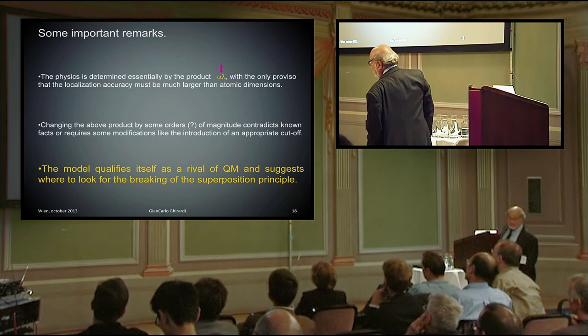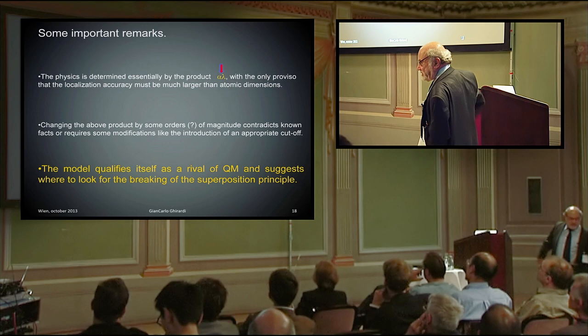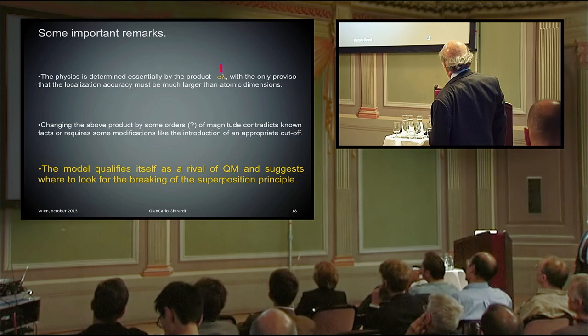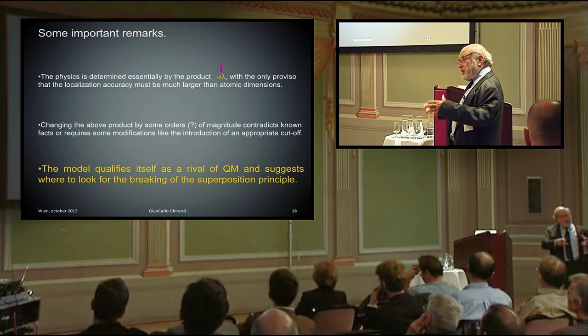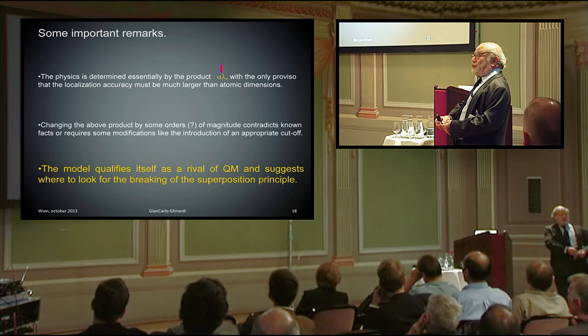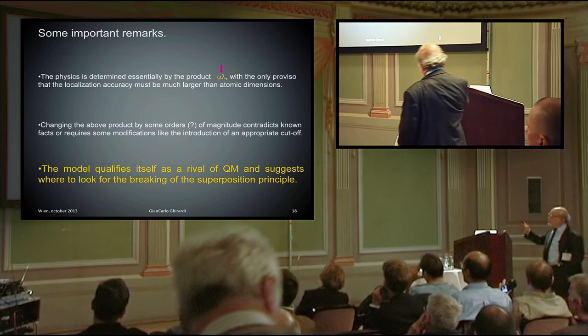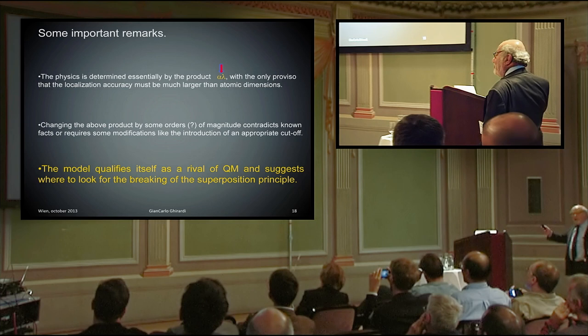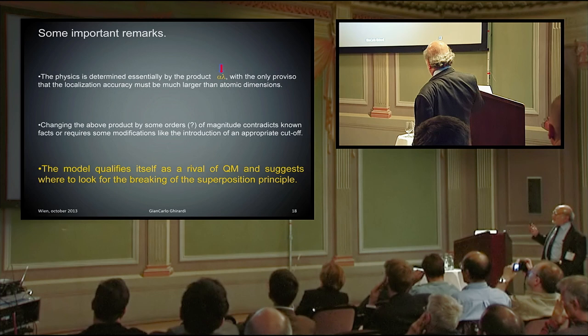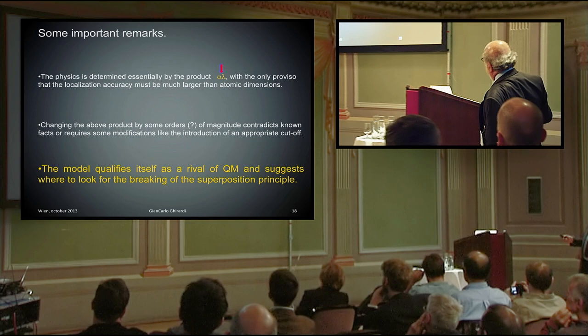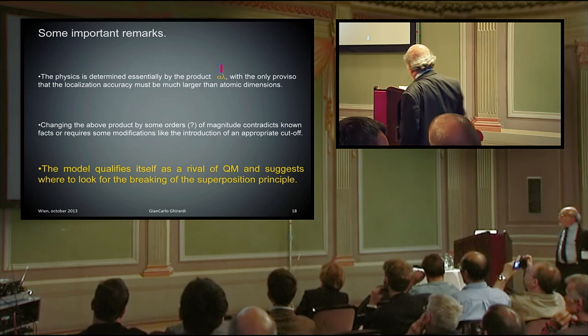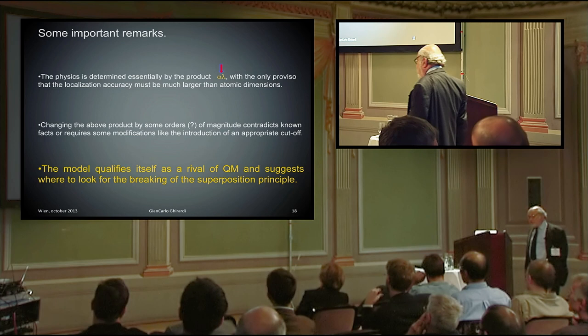Some remarks. The physics is determined essentially by the product of alpha times lambda. One over square root of alpha is the localization accuracy, lambda is the localization frequency, with the only proviso that the localization accuracy must be much larger than atomic dimensions. Otherwise, the localization inside the macroscopic body like a solid would produce dislocations or something like that, which can be proven already to violate experimental situations. Changing the above product by some orders, and I will discuss this in a moment, of magnitude contradicts known facts or requires some modification like the introduction of an appropriate cutoff.